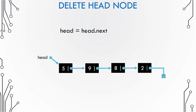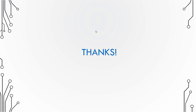What if you have to delete the head node? It's quite simple — just move the head pointer to point to the next node: head = head.next. Deleting an element is quite easy in a linked list. You can also implement stack and queue data structures using a linked list.